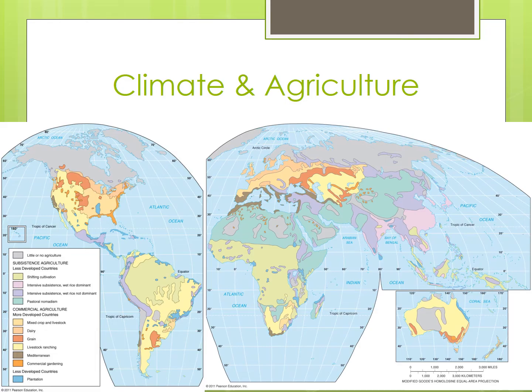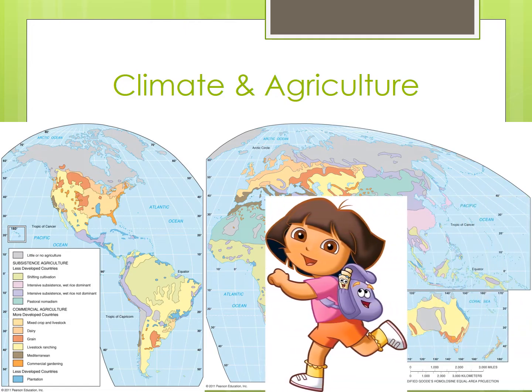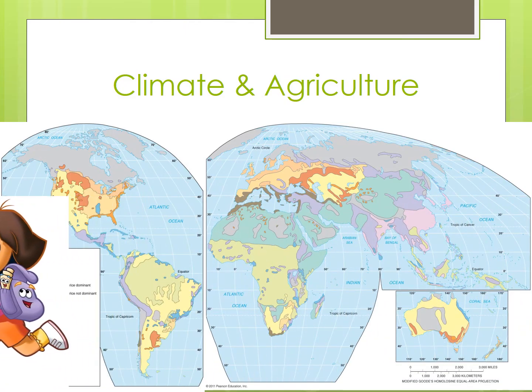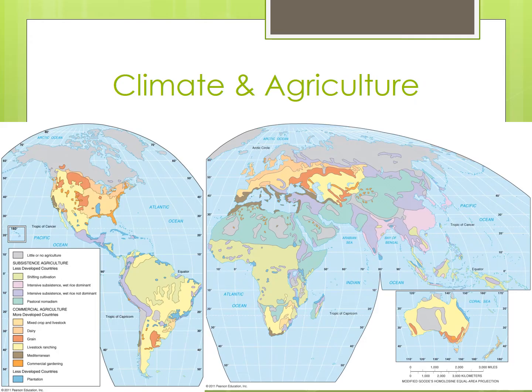Now let's take a look at a map of agricultural systems around the world. What kind of patterns do you notice here? Take a moment and write down some observations. You should be prepared to identify the agricultural systems on this map and where they're practiced. This is a categorical map without any political boundaries, so be prepared that they may give you a national map with only a single agricultural system shaded for you to identify.